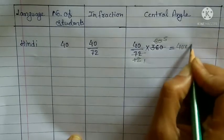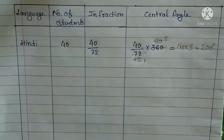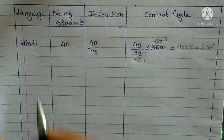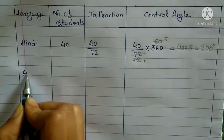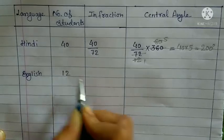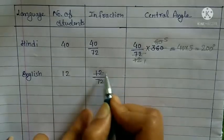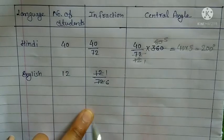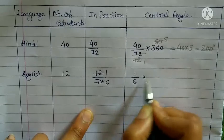So the angle for Hindi is 40 into 5 equals 200 degrees. For English, how many students are there? 12 students. So 12/72 simplifies to 1/6. Therefore 1 upon 6 into 360 degrees.